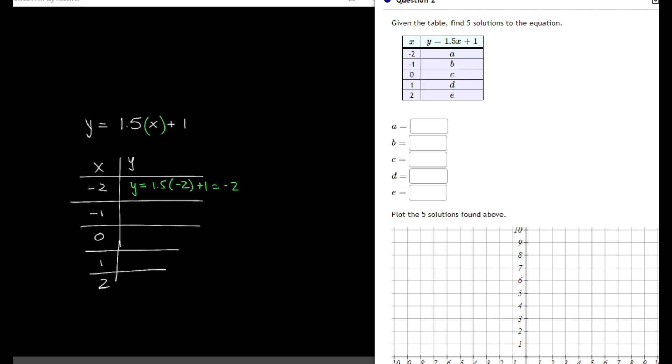Then I plug in negative 1, so it's going to be 1.5 times negative 1 plus 1. That's negative 1.5 plus 1, which equals negative 0.5.